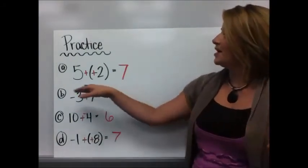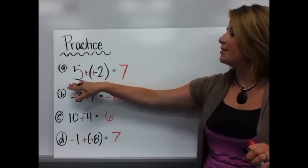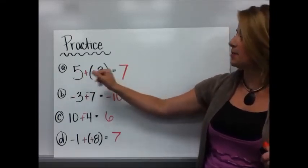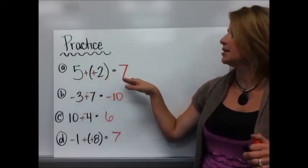Let's see how you did. I started with 5 minus negative 2. Keep 5, change subtraction to addition, change negative 2 to its opposite, which is a positive 2. Reread it. 5 plus positive 2. That's a lot easier. 7.